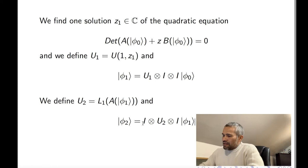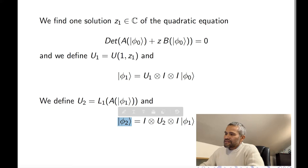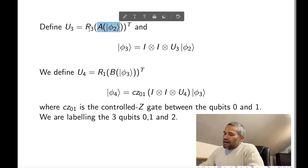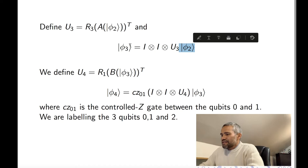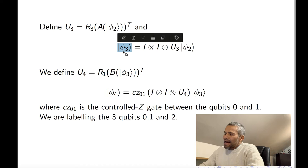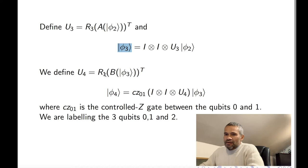This new state has two matrices. We are going to use the A matrix, and R3 of that A matrix transposed is going to be our matrix U3. With U3, we change the state to produce a new state. The new state has a matrix A and a matrix B, and we compute the unitary matrix R1 of B — the transpose of that — which is our matrix U4.